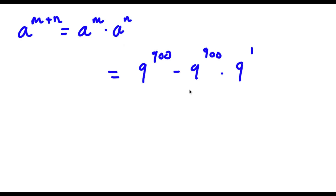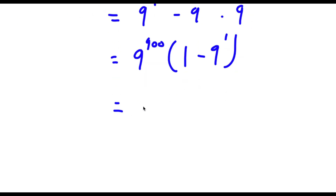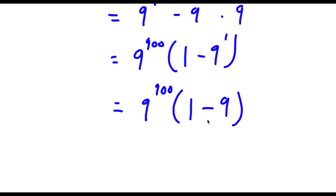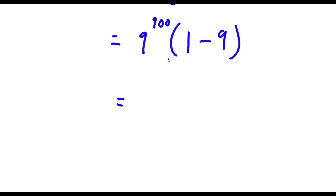Because both terms have 9 to the power of 900 in them, I can factor out 9 to the power of 900. So now I have 9 to the power of 900 times (1 minus 9), because 9 to the power of 900 divided by itself is 1, and what remains from the second term is 9 to the power of 1. Since 9 to the power of 1 is just 9, and 1 minus 9 is negative 8, I have 9 to the power of 900 times negative 8.